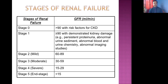After going through these renal function tests, let's talk about the different stages of renal failure. Consider three patients with different GFR values. If GFR is still more than 90 but less than 120 ml per minute, this is stage 0 — risk factors are present for chronic kidney disease but not most problems. Stage 1: GFR is still more than 90 with demonstrated kidney damage, highlighted by persistent proteinuria, abnormal urine sediment, abnormal blood and urine chemistry, and abnormal radiological tests.